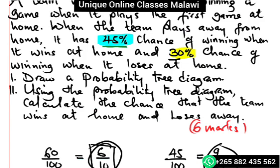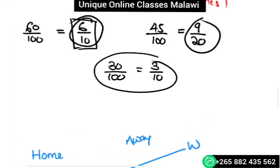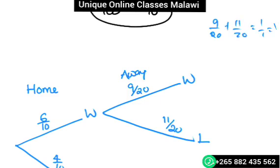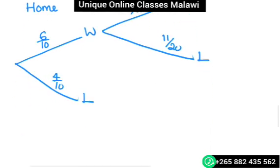When it wins at home, there's 45 percent, which converts to 9 over 20. So the probability is 9 over 20 for winning, and 11 over 20 for losing. The probabilities sum to one. We'll do the same for the other branch.